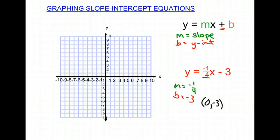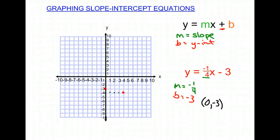We want to find (0, negative 3) on our graph. Then we're going to move according to the slope — first we'll go down 1 and to the right 4, then up 1 and to the left 4. Moving from our starting point, we go down 1 and to the right 1, 2, 3, 4 — that's our next point. We repeat this, and then going in the opposite direction: up 1 and to the left 1, 2, 3, 4. We can continue this along the grid.